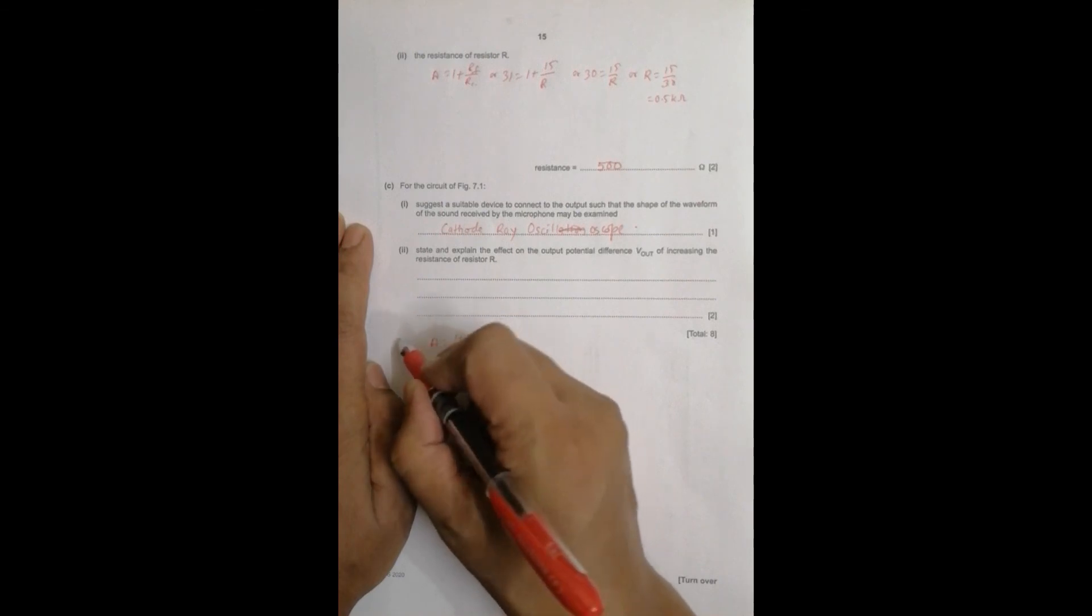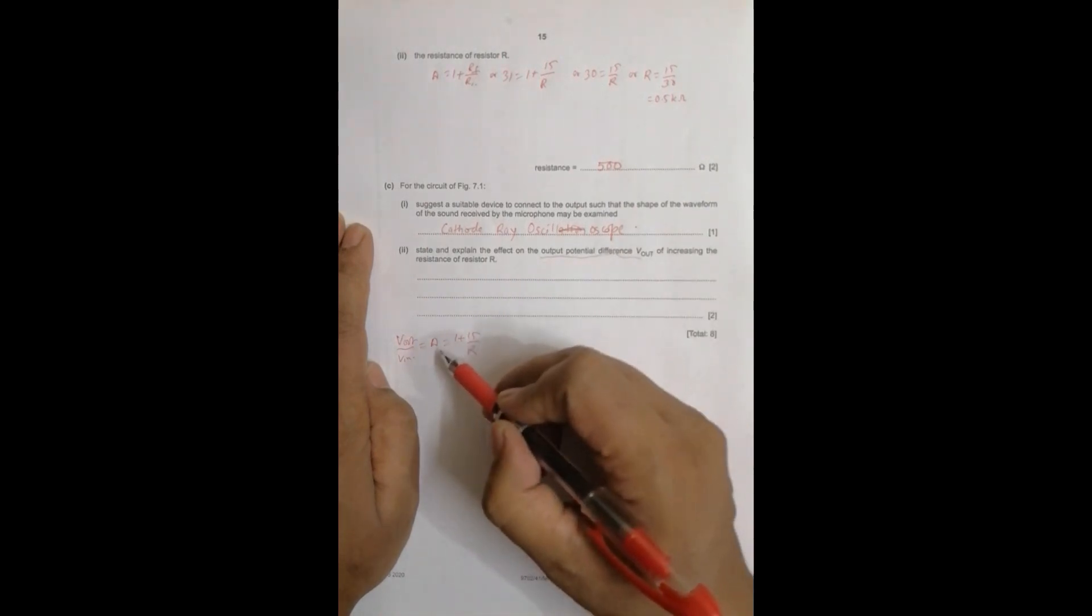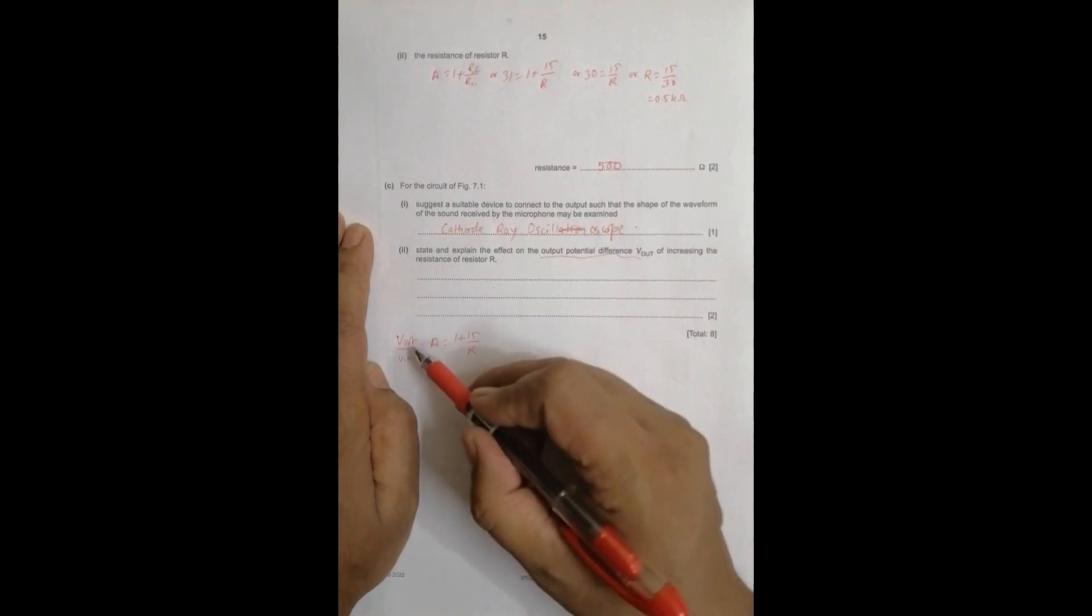And if A decreases, then our V out will also decrease. The output potential difference will decrease because of this thing. So when R is increased, A will decrease. When A decreases, this V out also should decrease. So that's the answer to this question.